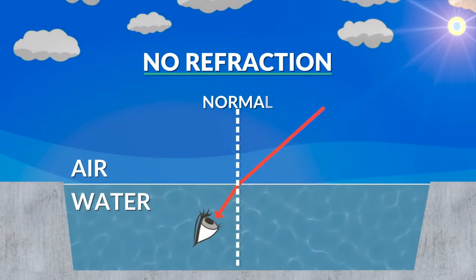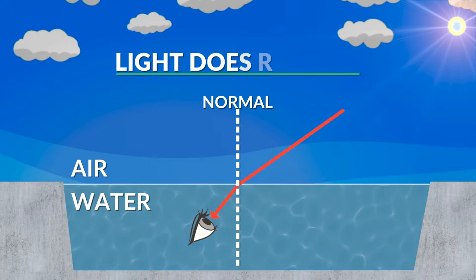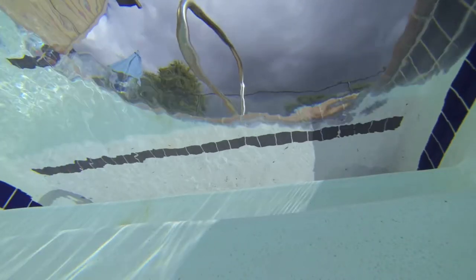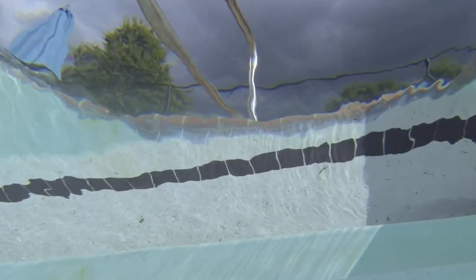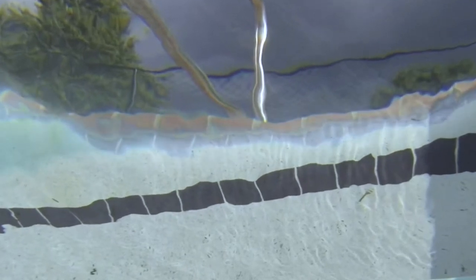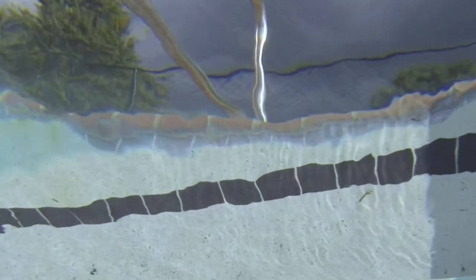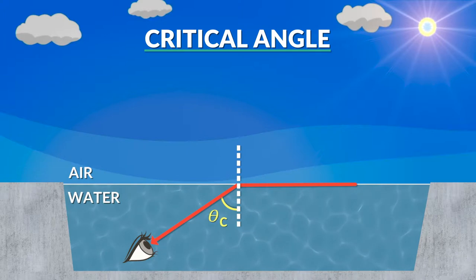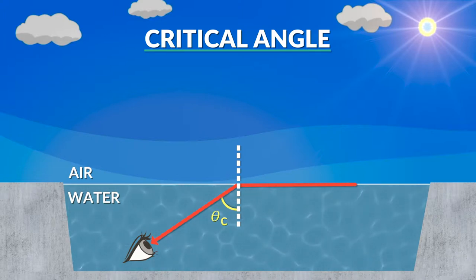Now let's shift our gaze and look at an angle towards the edge of the pool. The images have shifted because of refraction — the light is bent according to Snell's Law. If you look at an even sharper angle towards the surface, you see only a strange silvery line that doesn't make sense. You're looking at what we call the critical angle. This is the angle of incidence which causes an angle of refraction of 90 degrees.